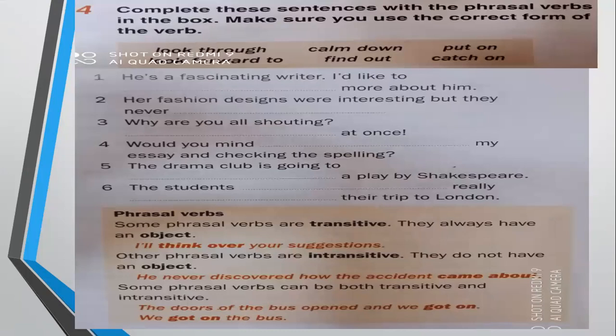Now for the first activity: complete these sentences with the phrasal verbs in the box. Make sure you use the correct form of the verbs. Here we have some phrasal verbs — let's look through them: calm down, put on, look forward to, find out, catch on. You are going to use the appropriate phrasal verb to fill in the blanks. When we say 'he is a fascinating writer, so I'd like to know more about him,' you would use 'find out.'